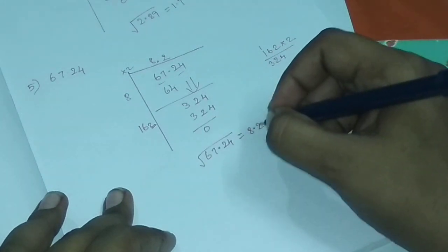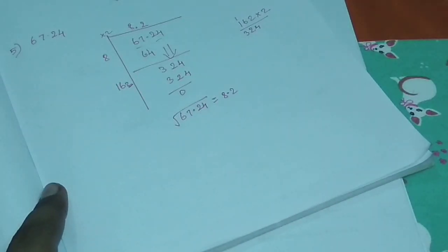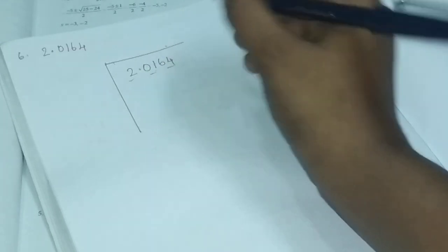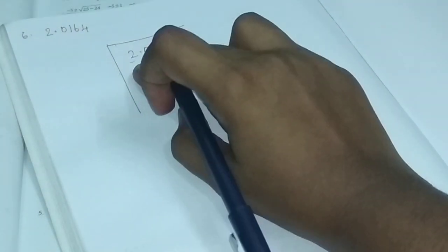Okay, so this is the answer. At the 6th sum, the 6th sum is 2.0164. So we will pair from the right side. So here we go, we will put 1 table.